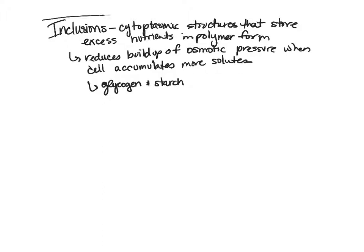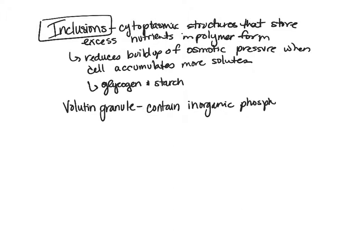There are several types of inclusions you need to know. First is the volutin granule, which stores inorganic phosphate used in metabolism and biofilms. Organisms with volutin granules can draw on this inorganic phosphate for their metabolic processes and also use it when building biofilms.